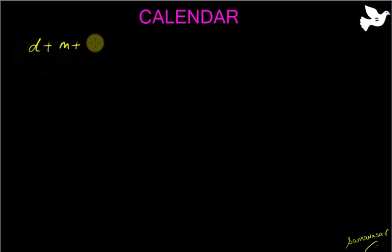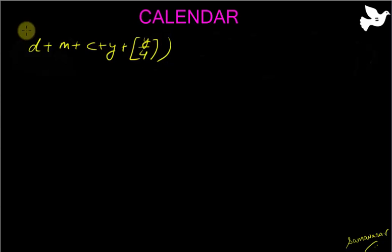Hello friends and welcome to the video on calendars. In this video you are going to find out the quickest and easiest method to find out the day if the date is given. To begin with, you need to remember a formula. The formula is very simple: d plus m plus c plus y plus y by 4, modulus 7.